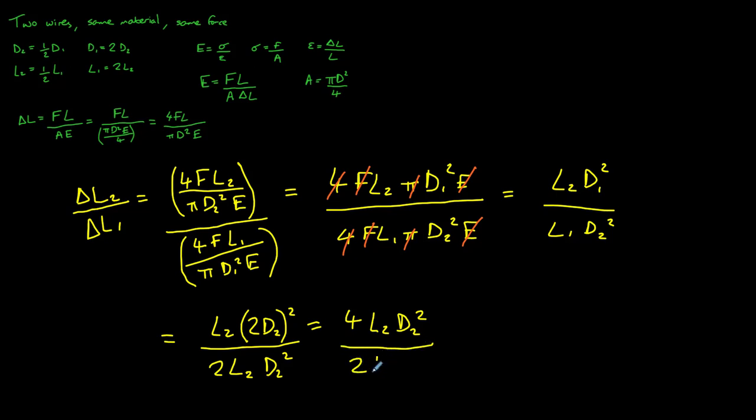We can now do our final bit of canceling. We'll cancel out our L2s and our D2 squareds, and that leaves us with 4 divided by 2, which is equal to 2, which is our final answer. The extension of wire 2 will be double the extension of wire 1.